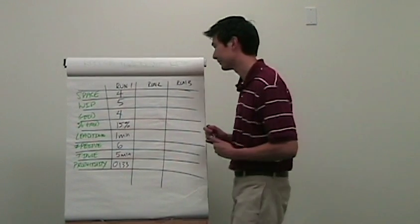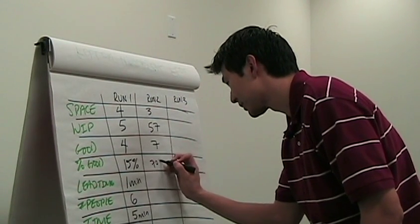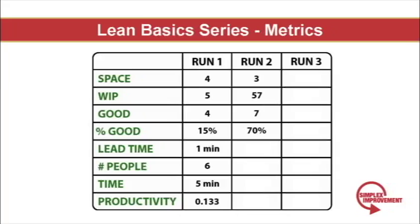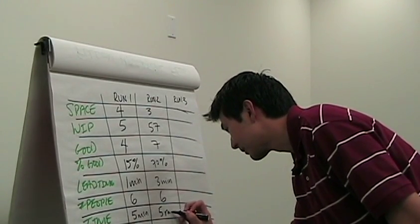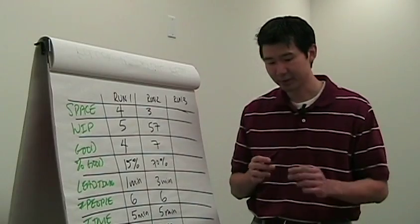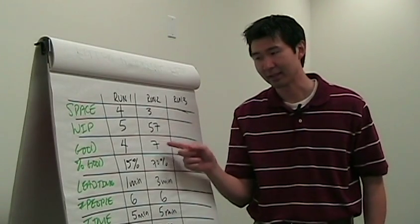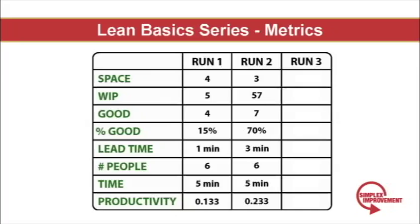Because there is so much work in process, my x-plane is caught behind a log jam — another downfall of mass production. It is not designed to quickly respond to rapidly changing customer demand. Let's review our metrics for the second run: we only used three tables, work in process was 57 units, they produced seven good planes, 70% were good, and the lead time for the x-plane was three minutes. There were six total people and we ran for five minutes. Productivity was 0.233. The benefits of mass production: they nearly doubled their good planes produced, but work in process was through the roof — 57 compared to five. They achieved a near 75% productivity gain from run one to run two.